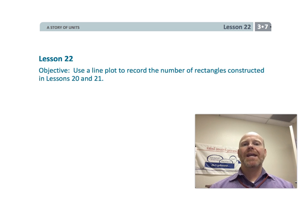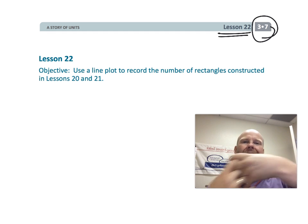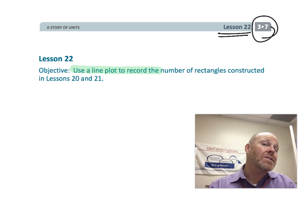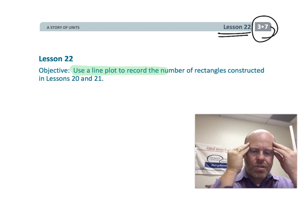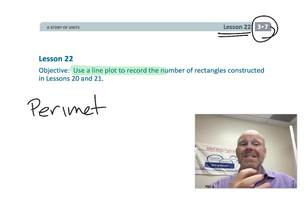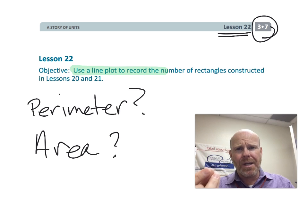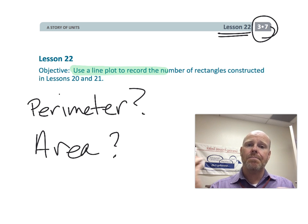All right, this is third grade, module 7, lesson 22, and in this lesson we're kind of clumping together perimeter and area. We're organizing our thinking with line plots. Parents and teachers, the real point of what we want to do with our third graders is have the students truly understand what is perimeter, what is area, how do you find them, what's the difference between the two. And the point of this line plot is also to say that there really is no connection between area and perimeter. Just because we know the area doesn't mean that's going to tell us something about the perimeter, and vice versa. We really want the students to see that perimeter and area are two distinct things, so let's get started.